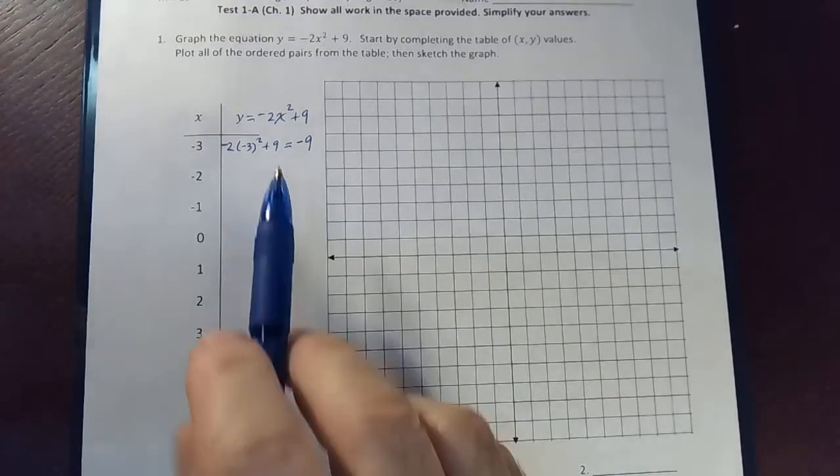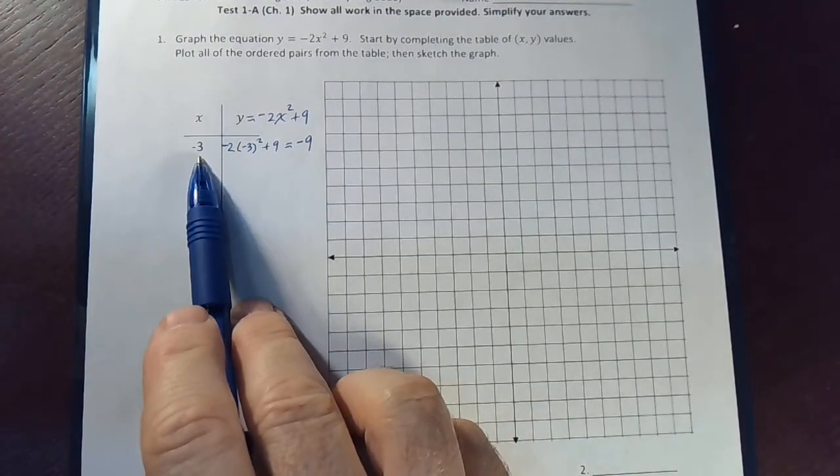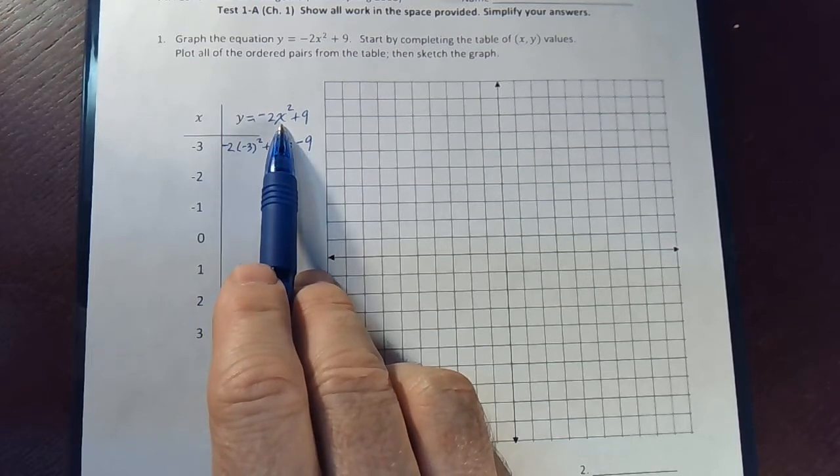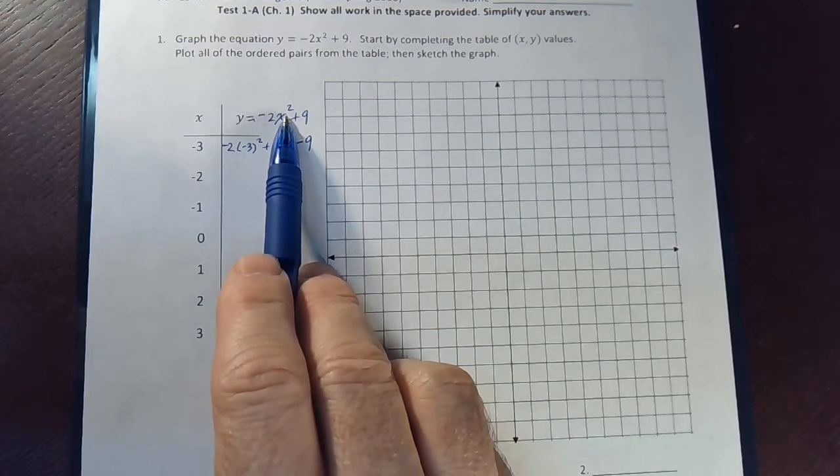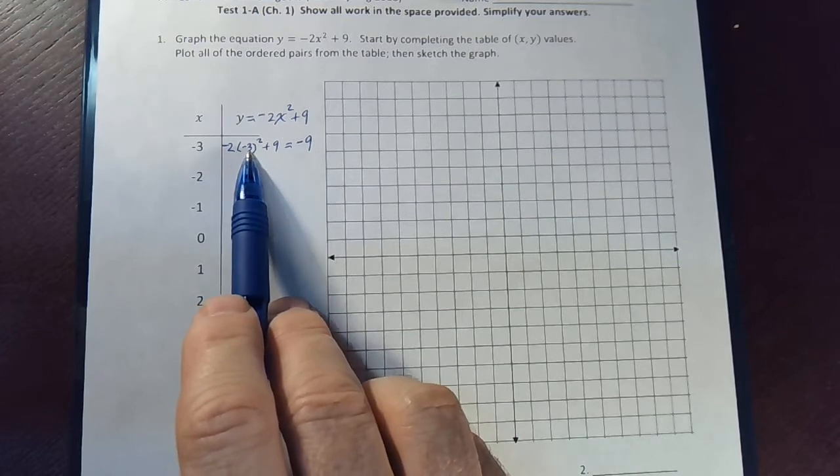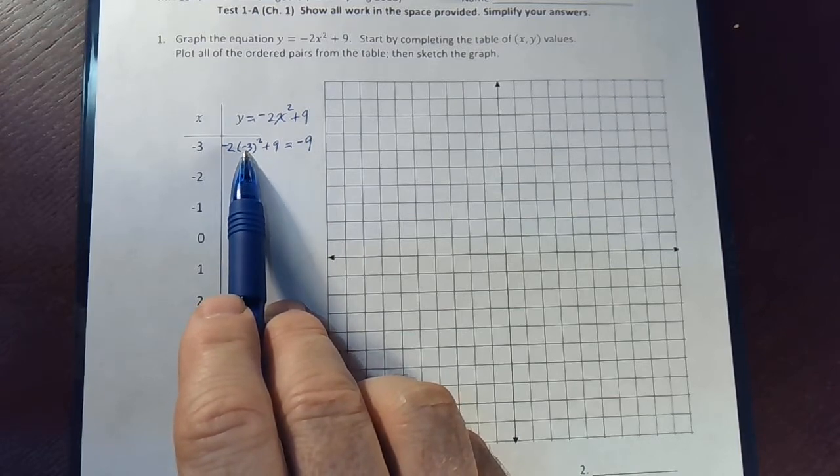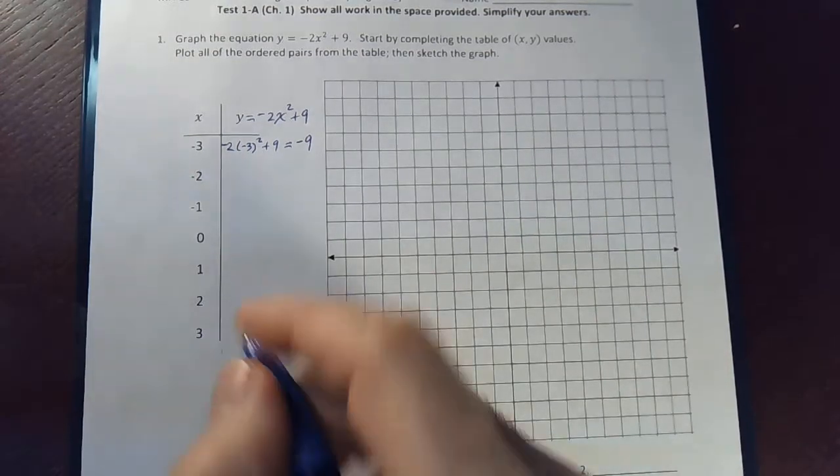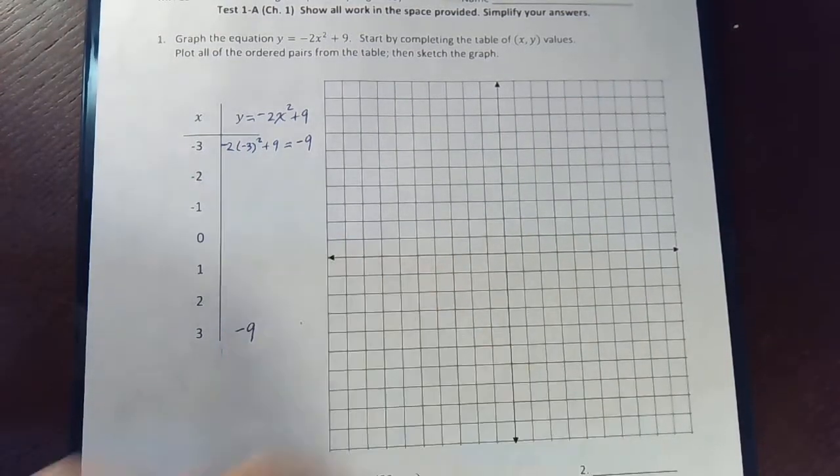All right, well, actually, what would happen if I plug in a positive 3? Well, the only difference would be that I'm squaring a positive 3 instead of a negative 3. That would give me exactly the same answer if I put a plus or minus 3 in here. So I know that when I plug in 3, I'm also going to get a negative 9. So let's save a little bit of time.